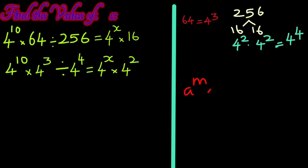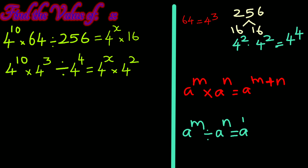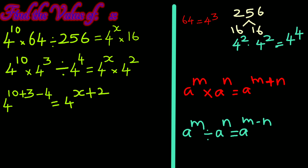Multiplying the common base, add the powers. Dividing the common base, subtract the powers. We have 4 to the power 10 plus 3 minus 4 equals 4 to the power x plus 2. We have the common base, so equate the powers. We get x plus 2 equal to 9, so taking 2 to the other side, x equals 9 minus 2, and x is equal to 7 as the solution.